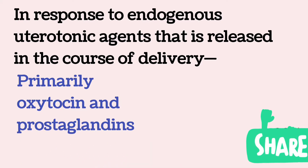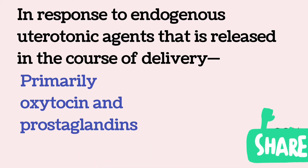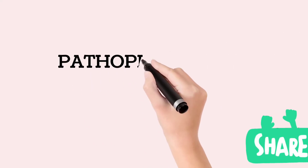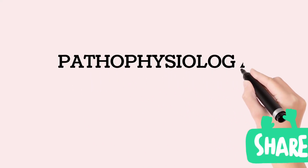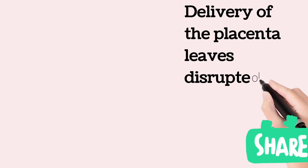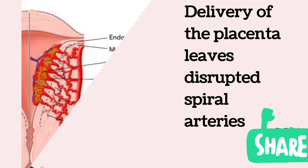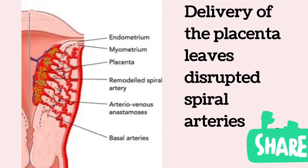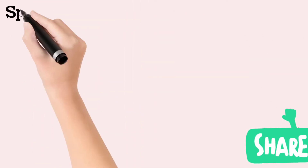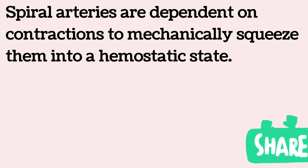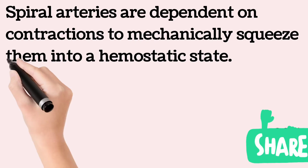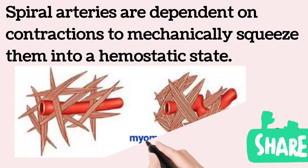Uterine atony leads to postpartum hemorrhage as delivery of the placenta leaves the spiral arteries disrupted. These spiral arteries pass through the myometrial cells, and during contraction these arteries get squeezed in between them.